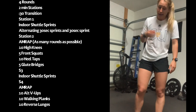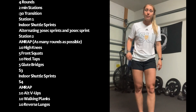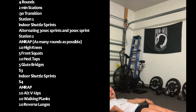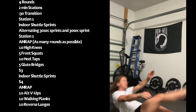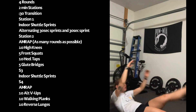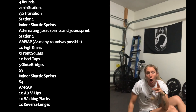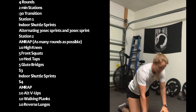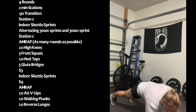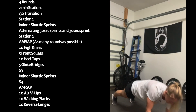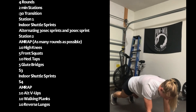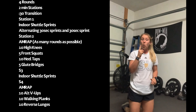Station four is going to be ten alternating V-ups. We saw this in one of our previous workouts. Alternating V-ups — we're lying on the ground, arms above the head, lifting up and touching our hand to our toe. You're doing ten alternating V-ups into ten walking planks. We're going to find that good plank position, go down and up — ten of those. Every time we come back up is one.